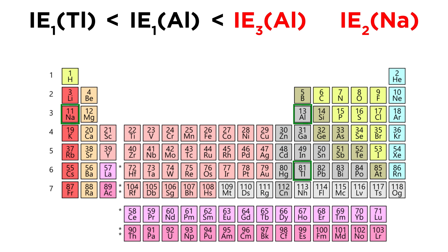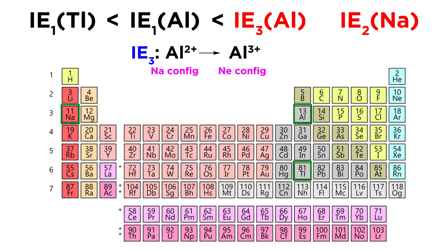Lastly, let's look at the third ionization energy for aluminum versus the second ionization energy for sodium. The third ionization energy is aluminum²+ going to aluminum³+. If aluminum loses two electrons, we go two elements to the left and get to sodium's electron configuration — 11 electrons. And aluminum³+ has a neon electron configuration, which is a noble gas, and noble gas electron configurations are very favorable. So for aluminum²+ to go to aluminum³+ is not that bad, because it's moving toward a noble gas electron configuration.